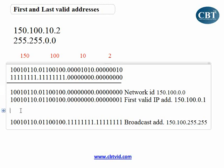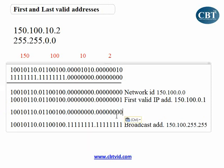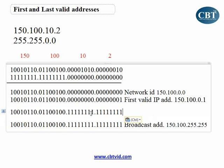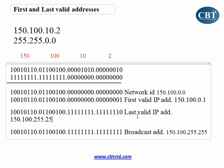This is my first valid address. What is your last valid address? That is easy — just deduct one from your broadcast address. If I deduct one from the broadcast address, the last one becomes zero. So, the last valid IP address will be 150.100.255.254. The first valid IP address that you can assign to a computer is 150.100.0.1, and the last valid address that you can assign to a computer is 150.100.255.254.